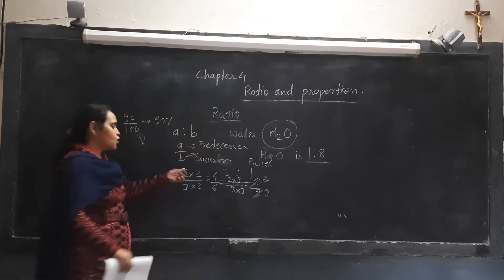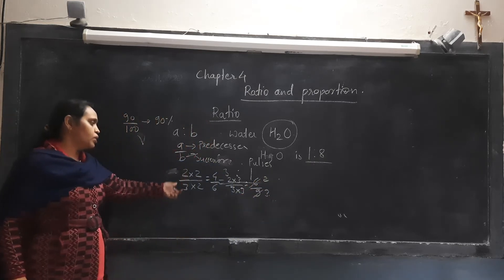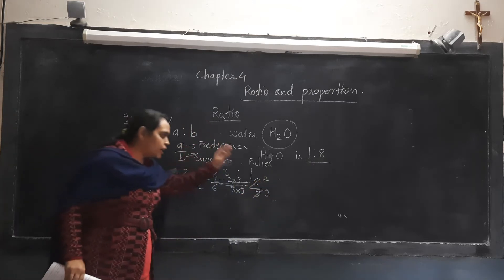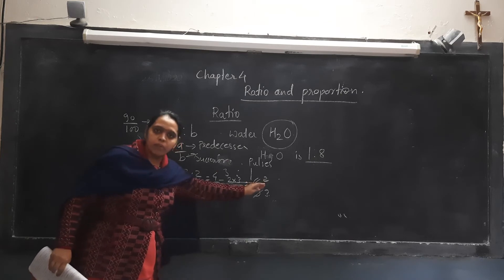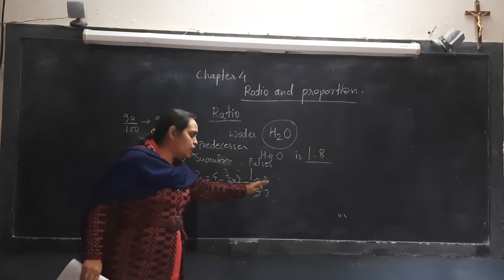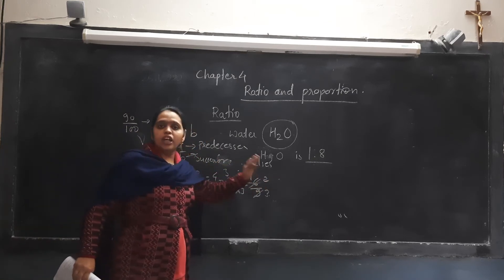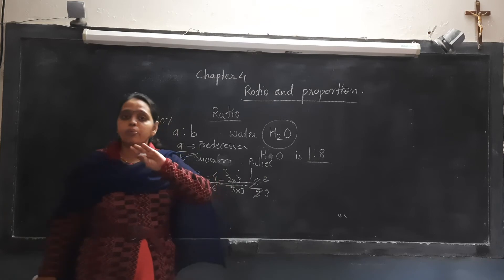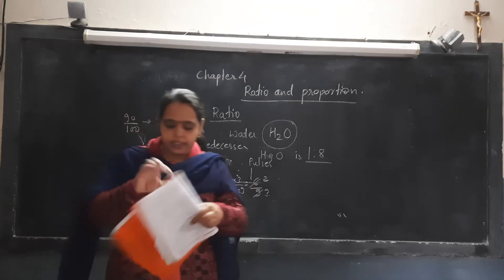The basic ratio is 2 is to 3. When we multiply or divide by any non-zero number, the ratio cannot be changed.